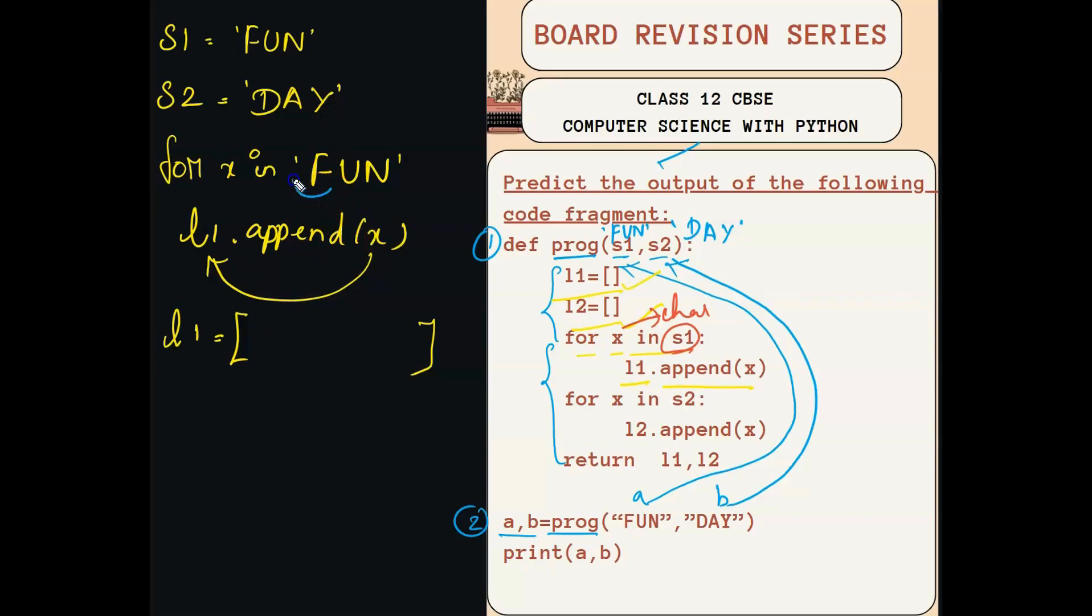On the first iteration, it will be iterating F and appending the F on the l1. On the second iteration, it will be reading U, iterating U, and appending it on the l1 list. And on the third iteration, N. It will read N and it will be appending N characters separately onto the list l1.